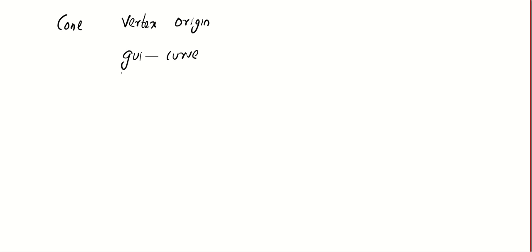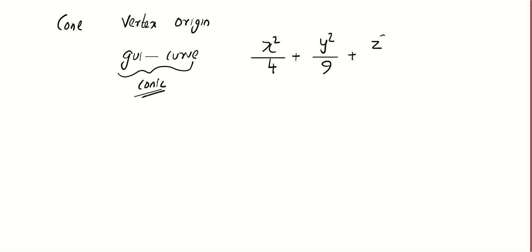I'll give you one question. Find the equation of a cone with vertex at the origin, where the guiding curve is given by: x²/4 + y²/9 + z²/1 = 1, and the plane x + y + z = 1. So we are given an ellipsoid and a plane.